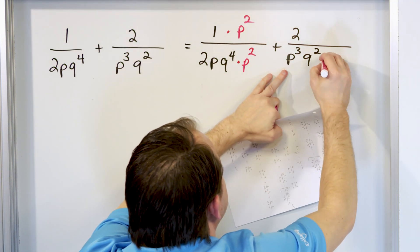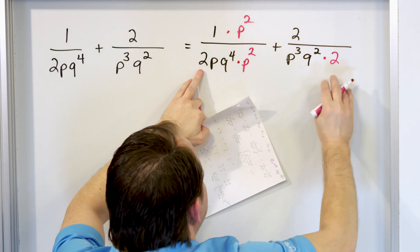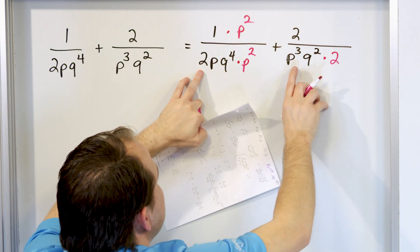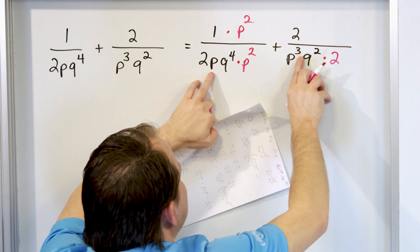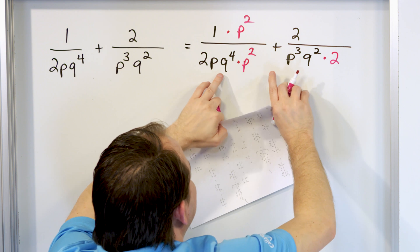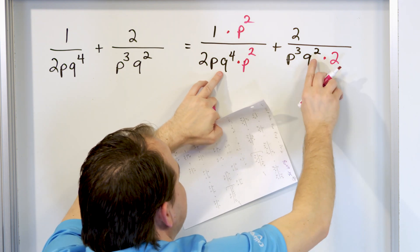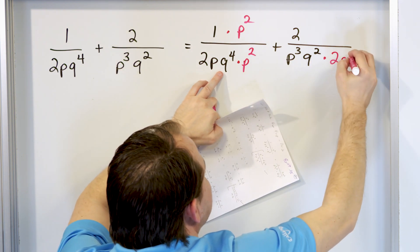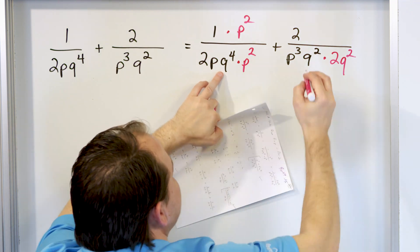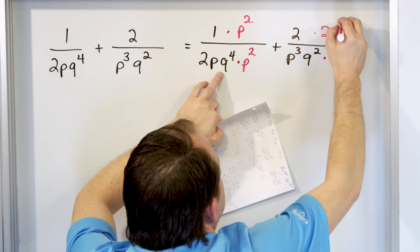I'll have to multiply by 2 to give me this 2. p is cubed over here and I have p cubed here, but I have four q's over here now and only two of them over here. So I have to multiply this times q squared. So I'll multiply the top by 2q squared.